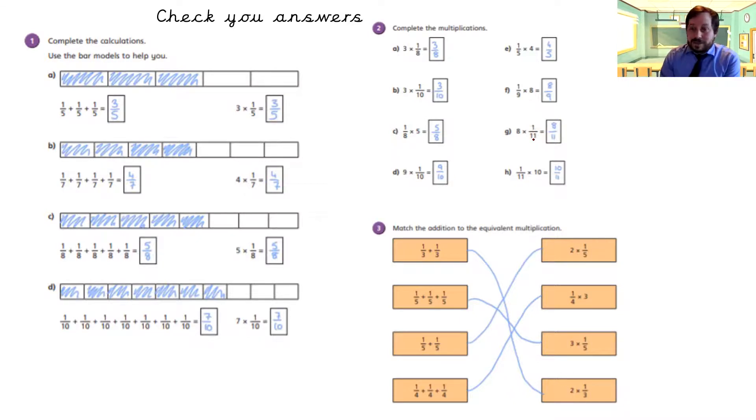Eight times one is eight. The denominator stays the same. One times ten is ten. The denominator stays the same. Then we match these: two-thirds the same as two-thirds. Three-fifths is the same as three times one-fifth. Two-fifths is the same as two times one-fifth, and three-quarters is the same as one-quarter times by three. Well done.